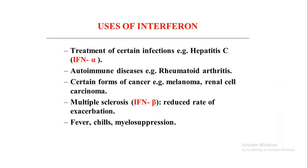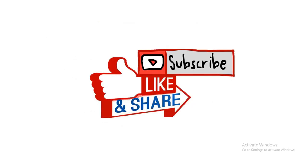Interferon also has important medical uses. It is used to treat certain viral diseases like hepatitis C — specifically, interferon alpha is used for this treatment. Autoimmune diseases such as rheumatoid arthritis can be treated using interferon therapy. Multiple sclerosis can be treated by interferon beta. Additionally, several cancers, various types of myeloma, and some renal cell carcinomas can be treated by interferons. That concludes the video on interferons. If you liked the video, give it a thumbs up, subscribe, and share it with your friends. Thank you.